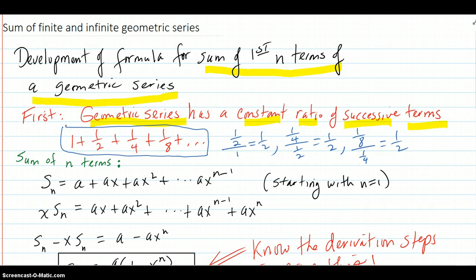We notice that if you take one-half and divide by one, you get a half. One-fourth divided by one-half is one-half, and one-eighth divided by one-fourth is one-half. That's because to get from one term to the other, you're multiplying by one-half.